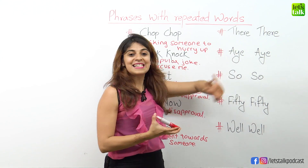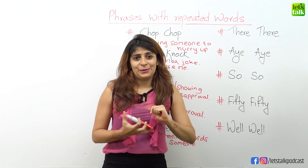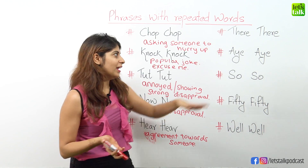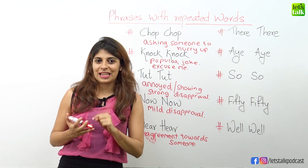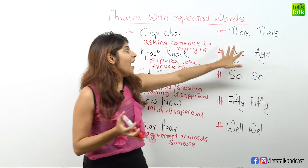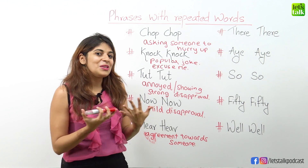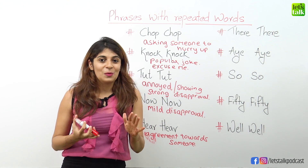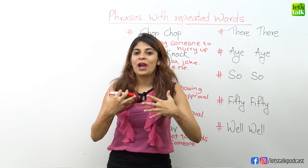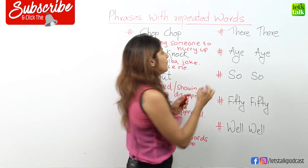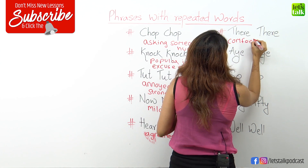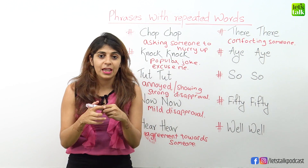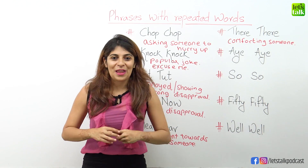Let's move on to the sixth phrase, which is 'there there'. When you see someone who is upset, crying, or a little unhappy about something, it's time to comfort them. This expression is perfect for adults to use with unhappy kids. So when you see a kid who is really unhappy, you'll say 'there there, everything is gonna be fine, you will feel much better'. So 'there there' is a way of comforting someone who is unhappy.